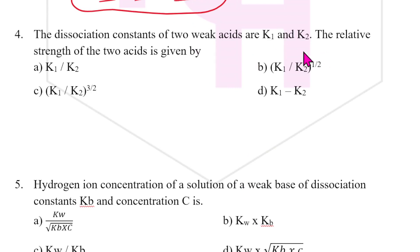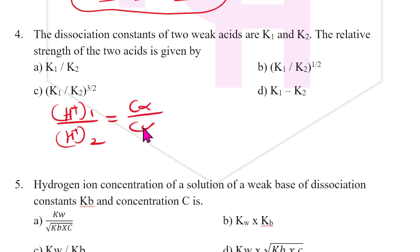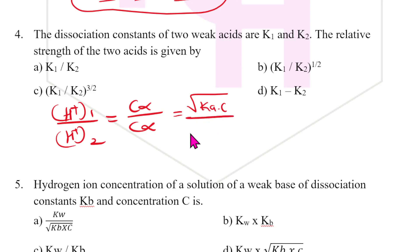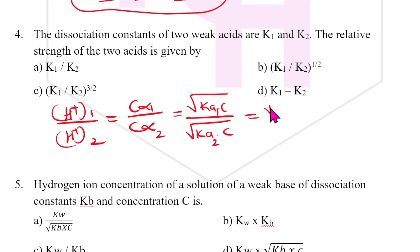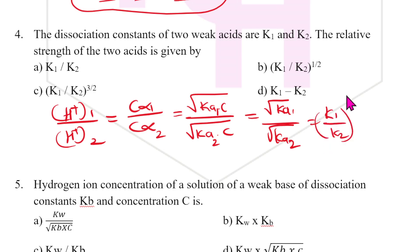Fourth question: the dissociation constants of two weak acids K1 and K2 are given. The relative strength is given by H⁺ of acid one divided by H⁺ of acid two. Since H⁺ = cα and α = √(Ka/c), the ratio simplifies to √(Ka1/Ka2), which equals (K1/K2) to the power of half. The answer is B.